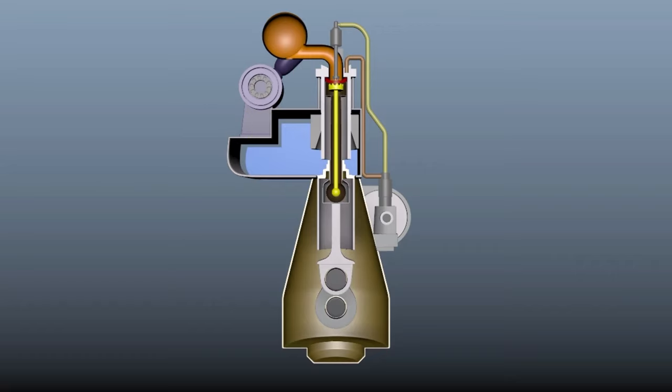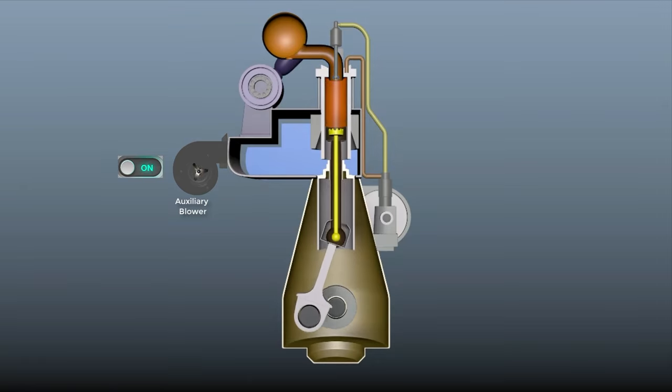Hence, additional blowers are installed which are switched on during the start of the engine. When the RPM of the engine reaches a range where turbocharger supplies fresh air, the blower is cut off.